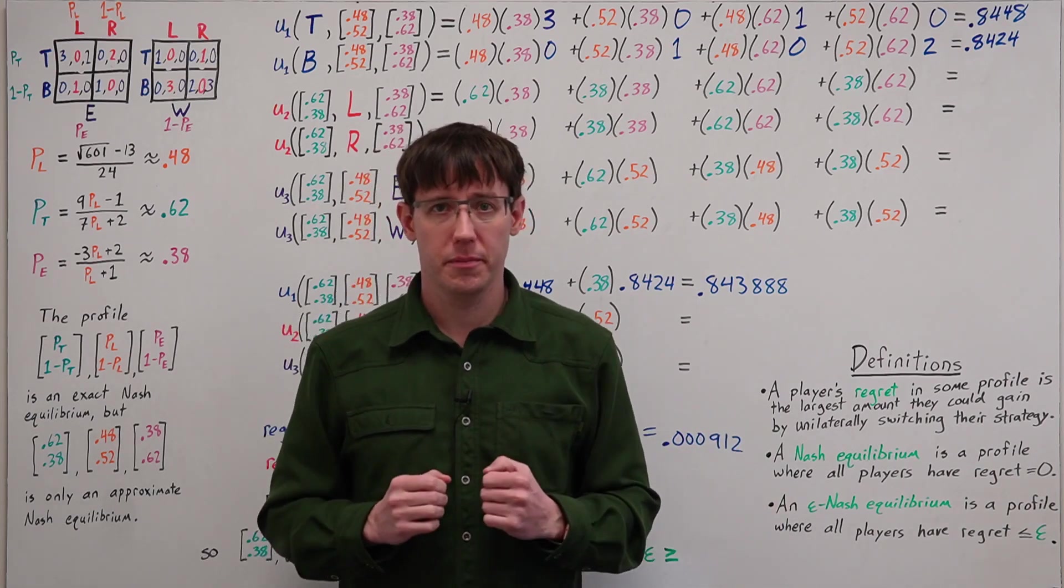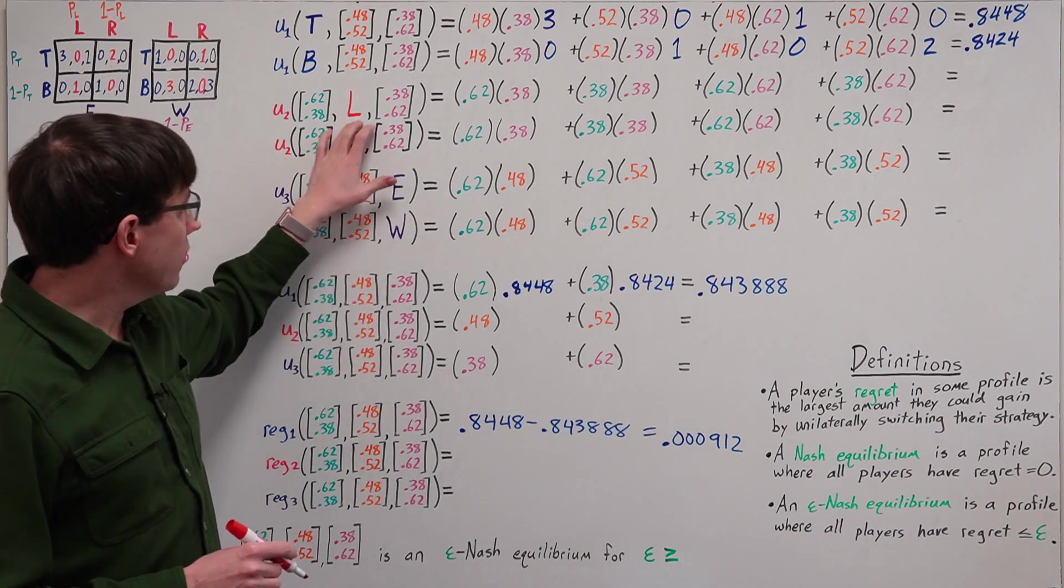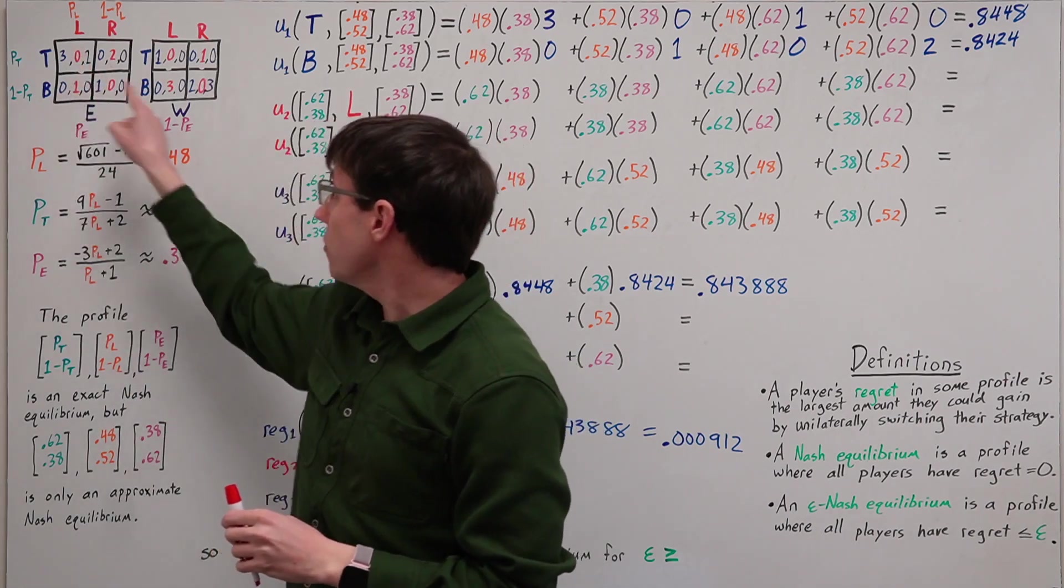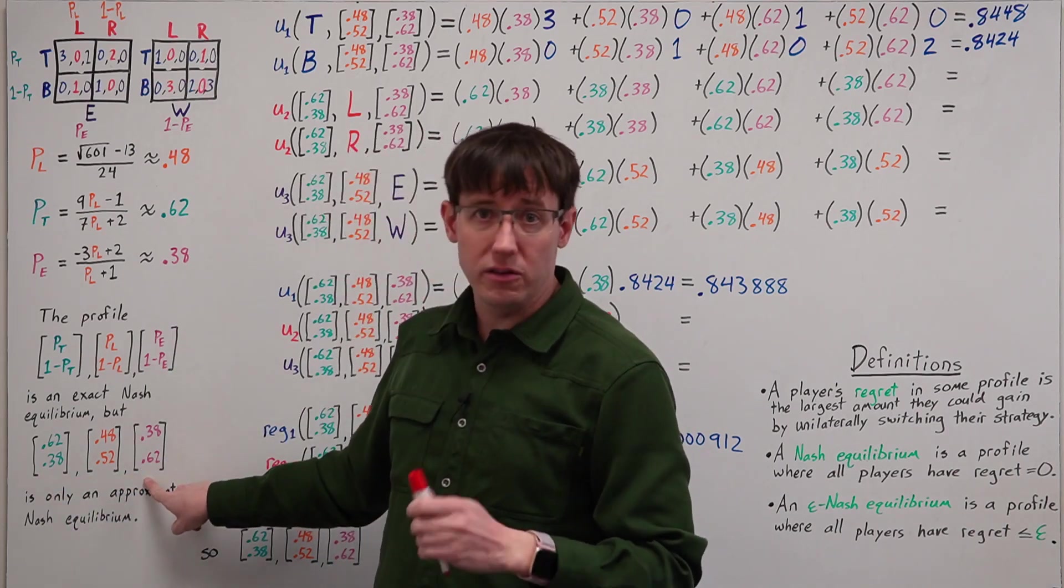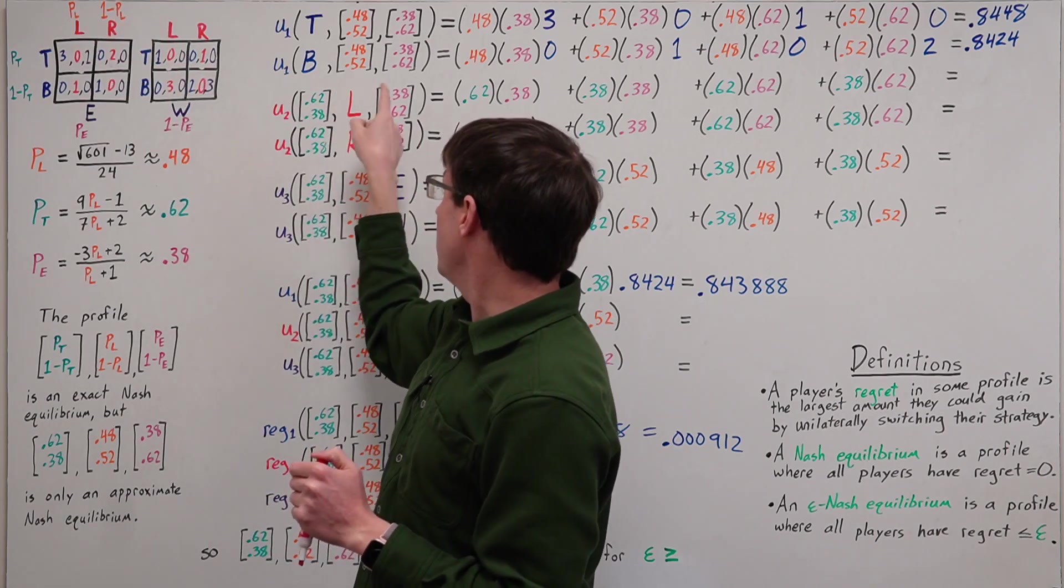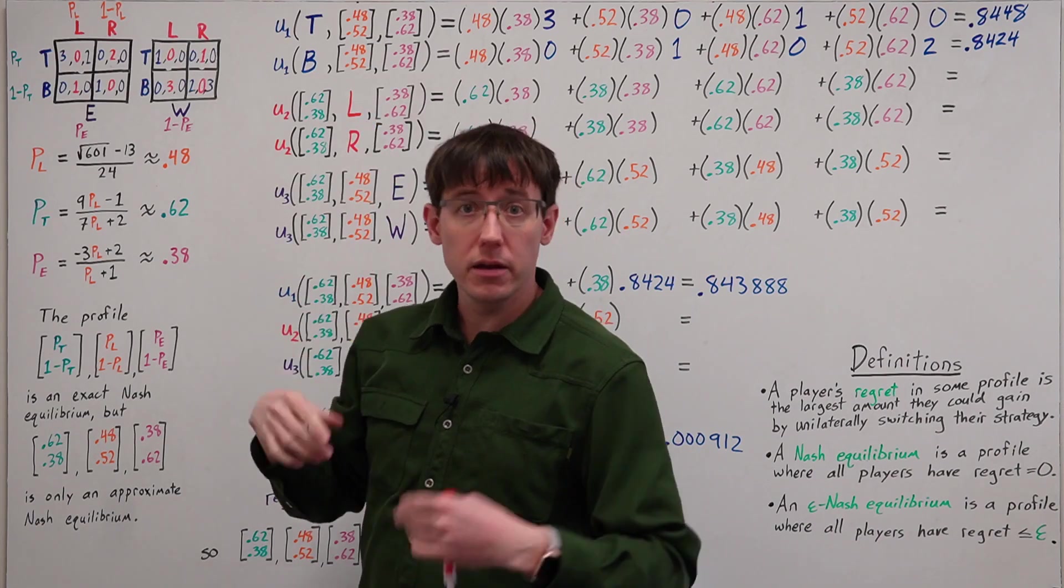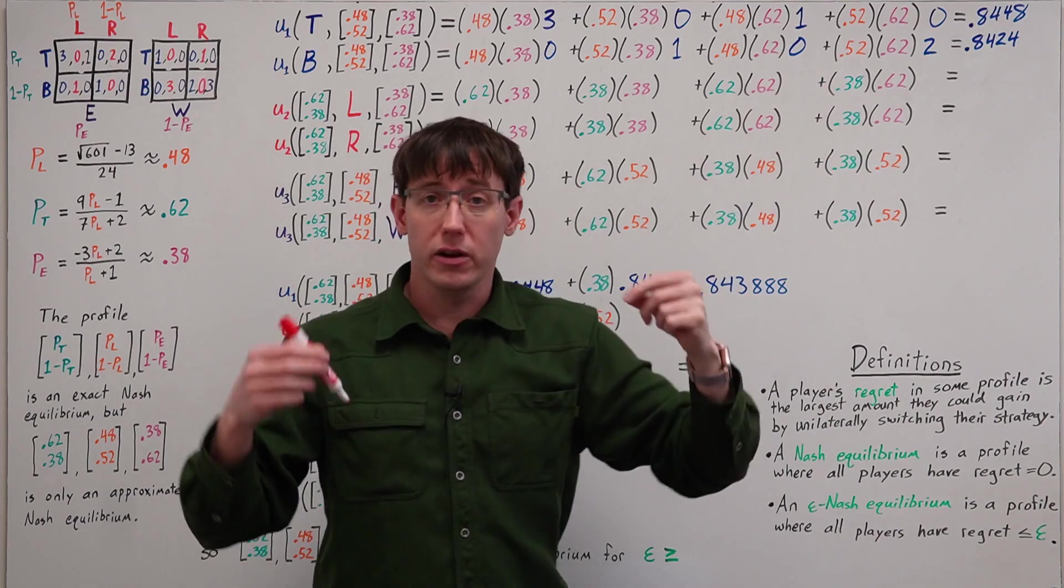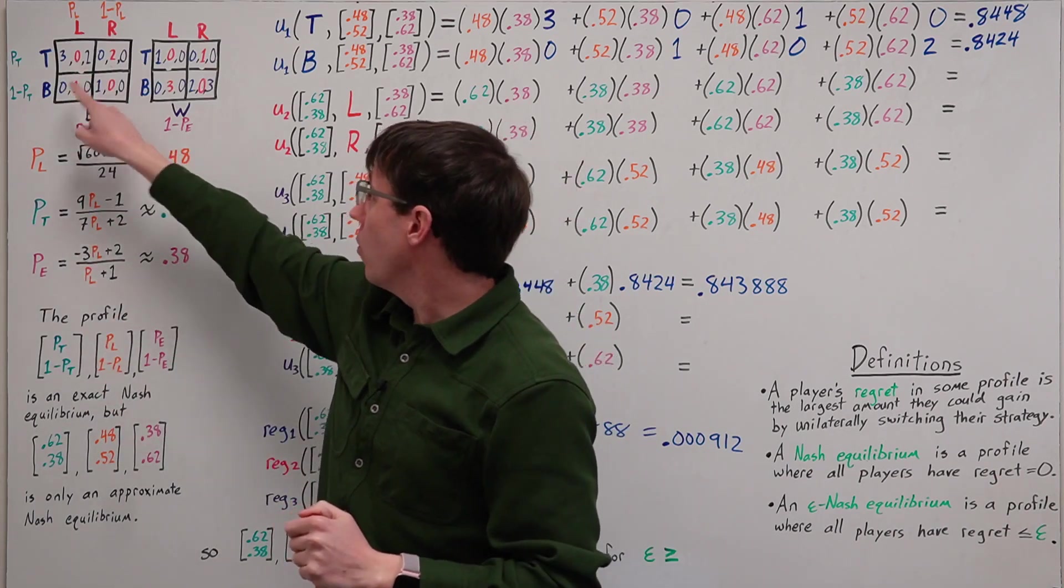If we perform the same expected utility calculations for each of player two's actions, when player two chooses left, we will get a distribution over these four outcomes with probabilities determined from player one's and player three's strategies. This outcome happens with probability 0.62 times 0.38. This outcome happens with probability 0.38 times 0.38, and so on. And we'll multiply each of those probabilities by player two's utility in that outcome, which are respectively 0, 1, 0, and 3.